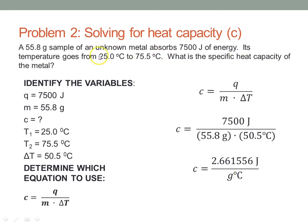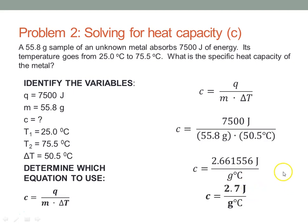Consulting the problem: 7500 has two significant digits, 55.8 has three, and 50.5 has three. We always round to the fewest significant digits, in this case two. Our second significant digit is the 6, but because the digit after it is a 6, it rounds up to 2.7 joules per gram degree C.